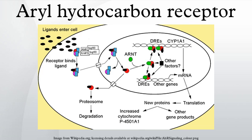Signaling pathway — cytosolic complex: Non-ligand-bound AHR is retained in the cytoplasm as an inactive protein complex consisting of a dimer of Hsp90, prostaglandin E synthase 3, and a single molecule of the immunophilin-like protein hepatitis B virus X-associated protein 2, which was previously identified as AHR-interacting protein.